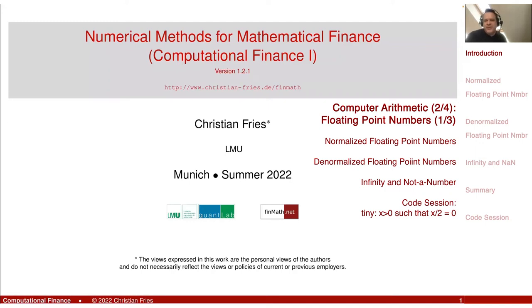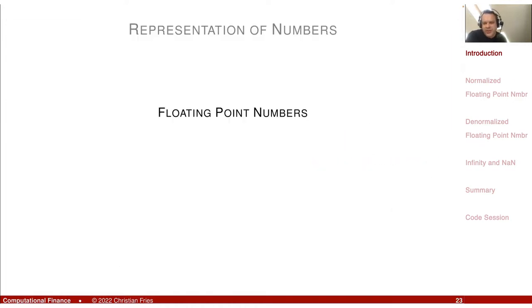Welcome to Numerical Methods for Mathematical Finance. In this session, I'd like to discuss floating point numbers — how does the computer represent fractions of integers? You might think it just takes a large integer interval and divides it by a constant, some kind of equidistant discretization. But the way floating point numbers are constructed is quite clever, because it has some nice properties, though strange things can happen. It's useful to understand how they are defined and constructed.